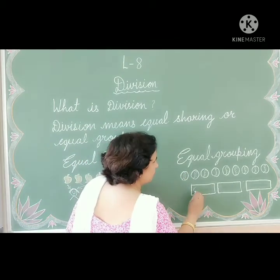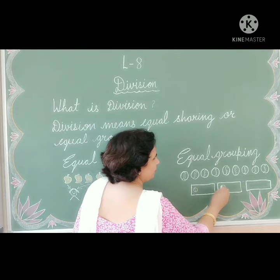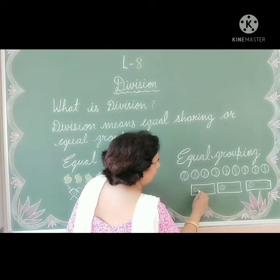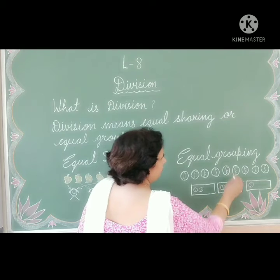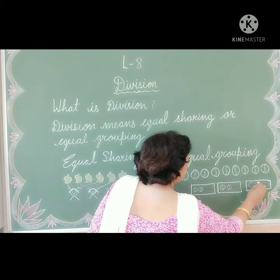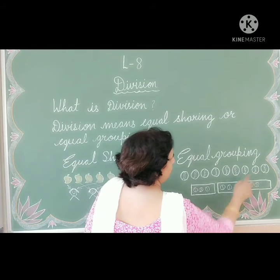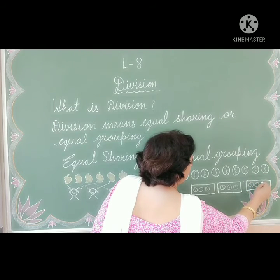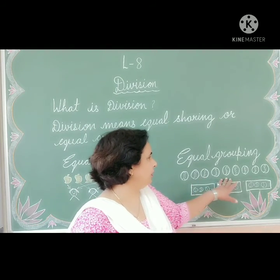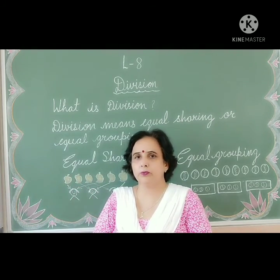First ball in the first row, second ball in the second row, third ball in the third row. We continue distributing the remaining balls — fourth, fifth, sixth, seventh, eighth, and ninth — across the three rows equally. Now we have seen three groups, each with three balls.